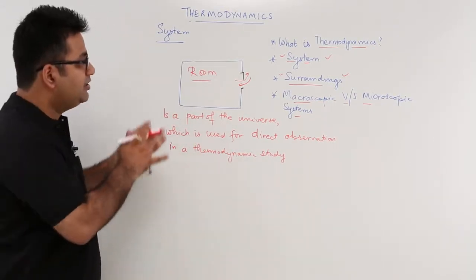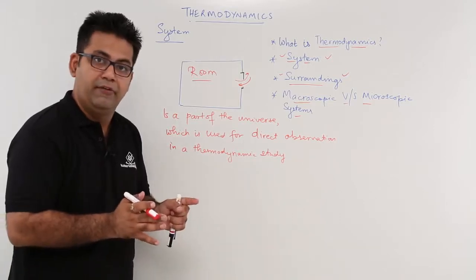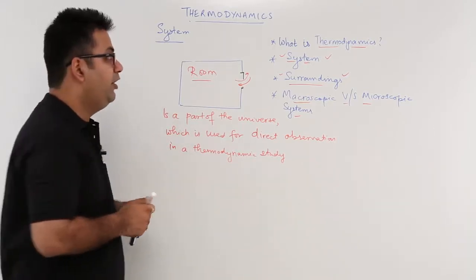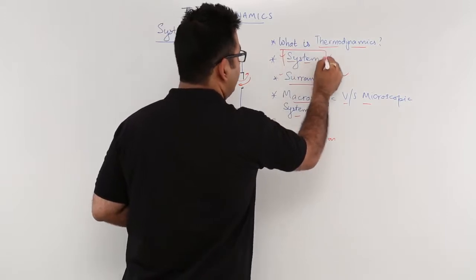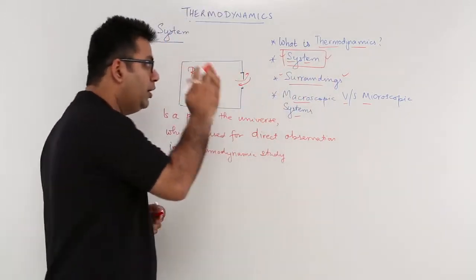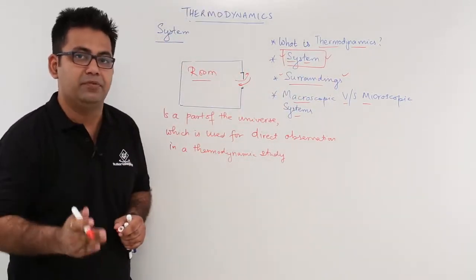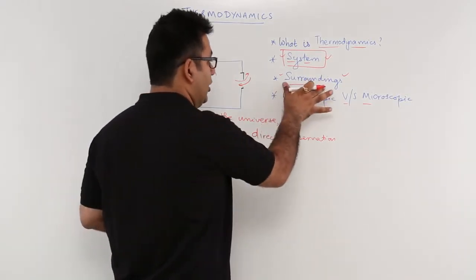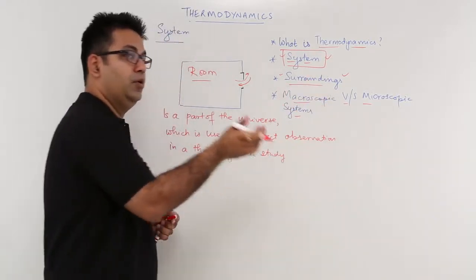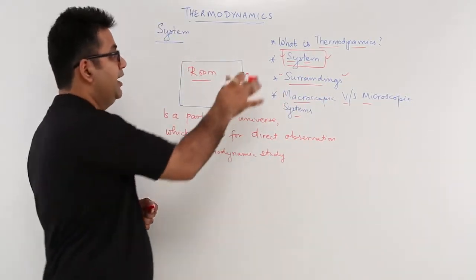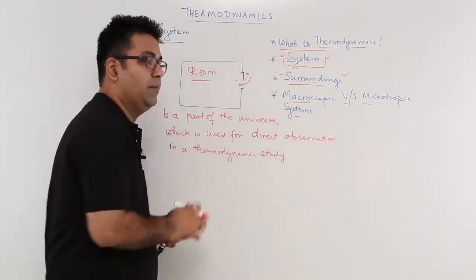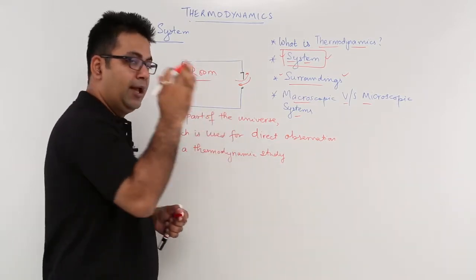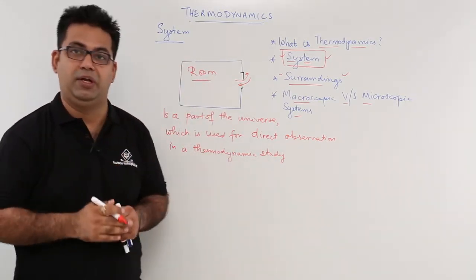The rest of the part of the universe is called surroundings. In the next video, we will talk about surroundings, and after that we will come to the types of systems. I need to discuss surroundings first because I will be using that concept when discussing the types of systems. So in the next video, let us define what surroundings are.